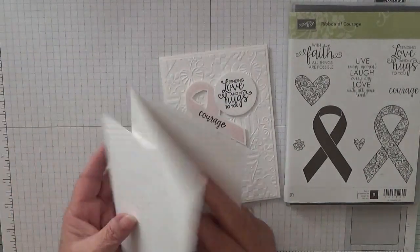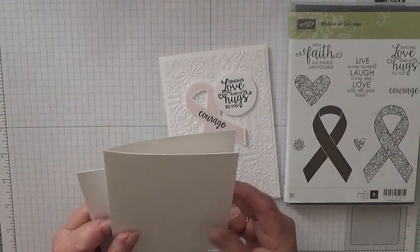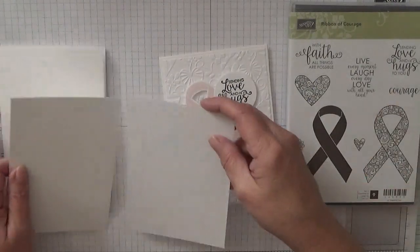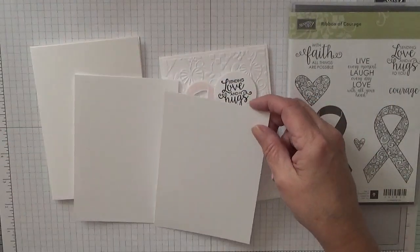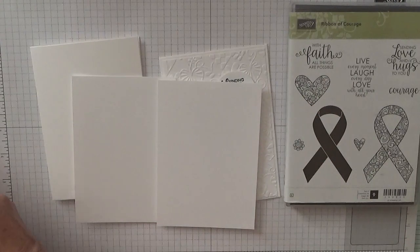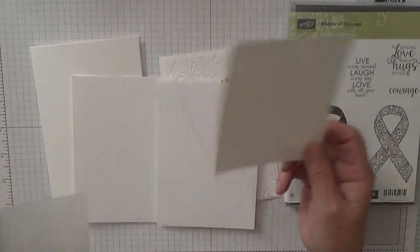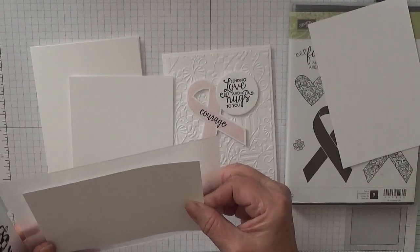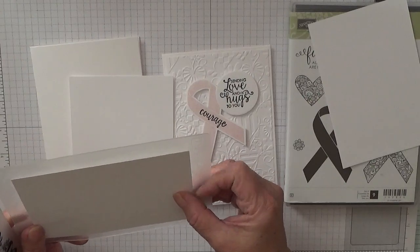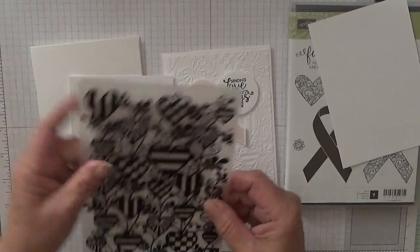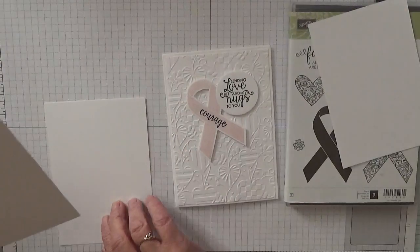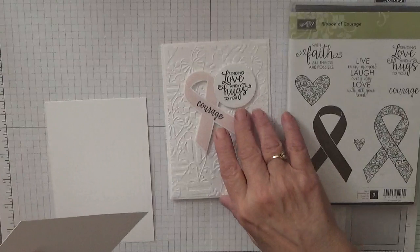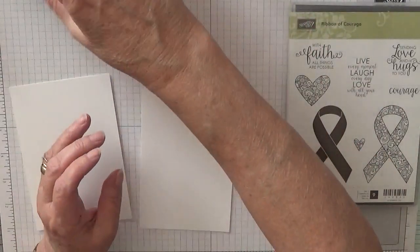I've just used a normal white card base of eight and a quarter by five and seven eighths. I've got two pieces of five and five eighths by three and seven eighths, and that's a scrap to stamp the ribbon and sentiment on. I'll just swap that round. So that's my front, that's my inside, that's the card base, that's my scrap. Put that over there, get rid of that because I've already mounted the stamps.